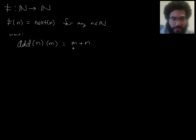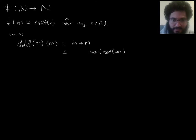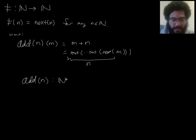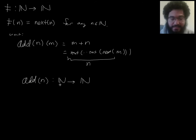By m plus n, I mean take m and then apply 'next' n times — keep applying next iteratively, applying it n times total. So 'add n' should be a function that takes natural numbers and gives back natural numbers, with the effect of applying next n times. Add n is a function that adds n to things — that nexts them n times.